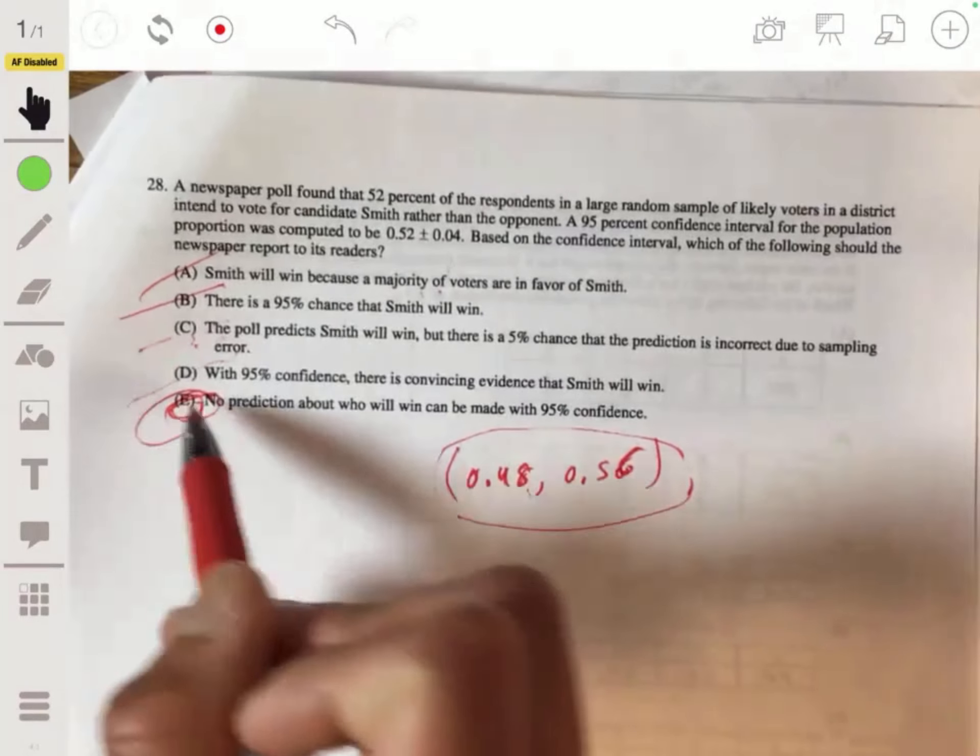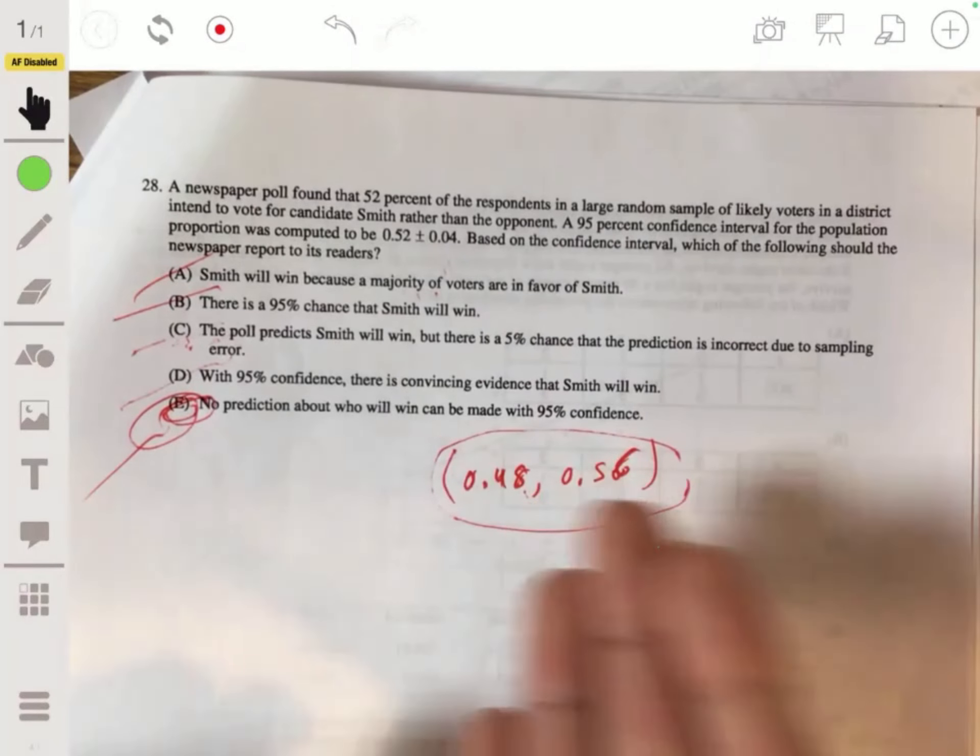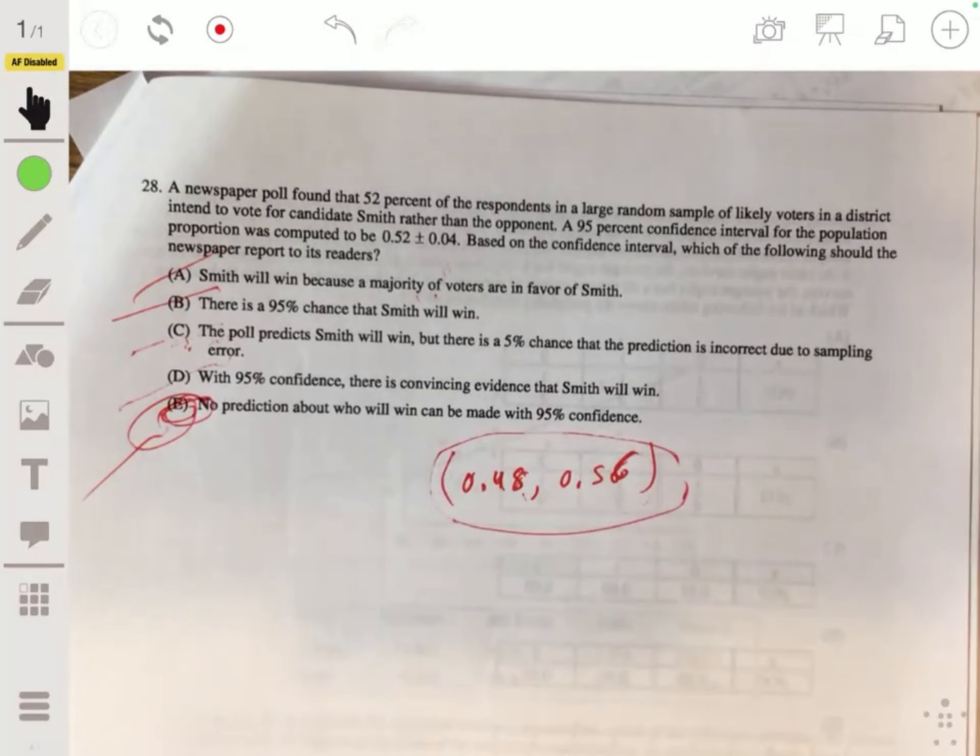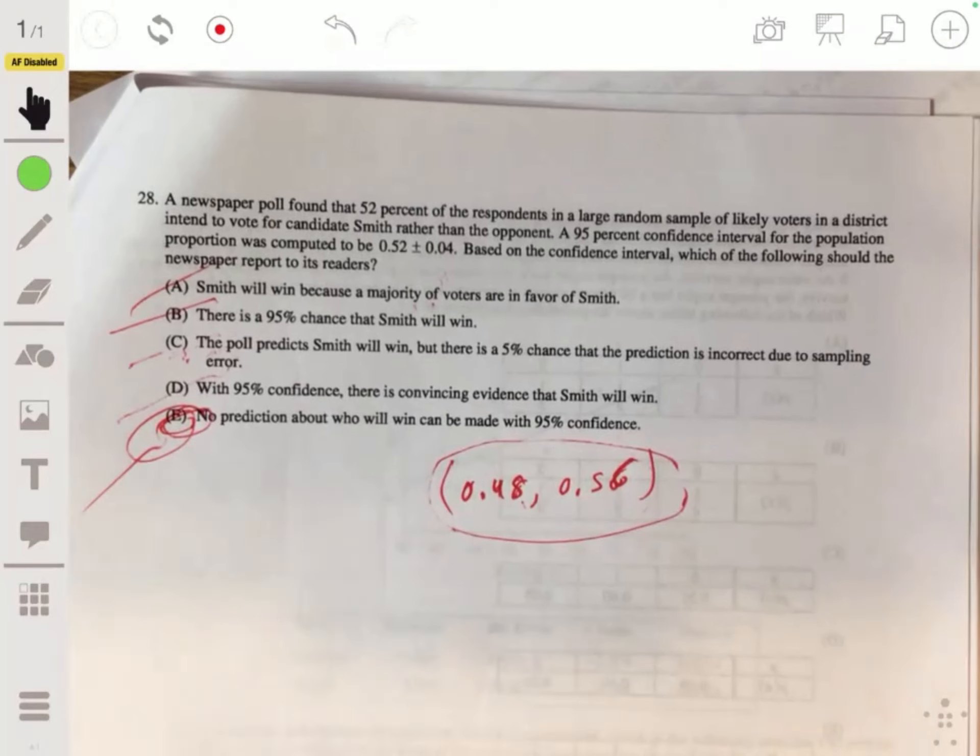And with 95% confidence there's convincing evidence that Smith will win. Yeah, no prediction can be made. Yeah, see, you can't really make a prediction because the values are above and below the 0.5 mark. So it's pointless.